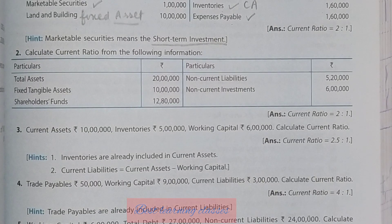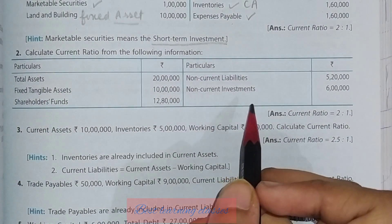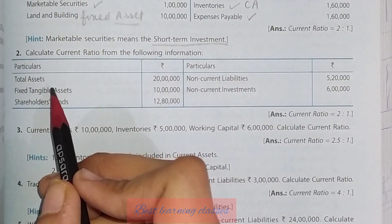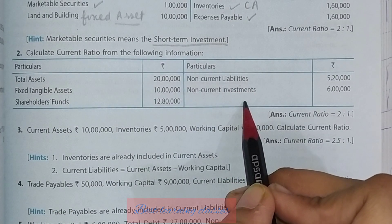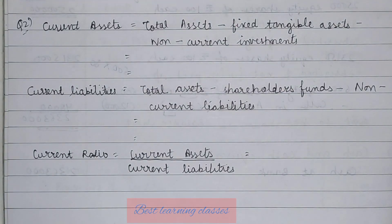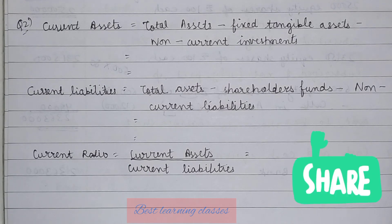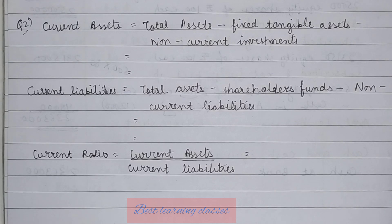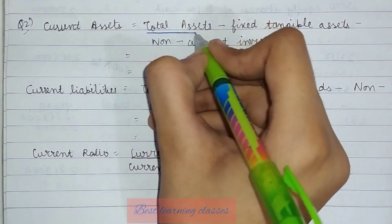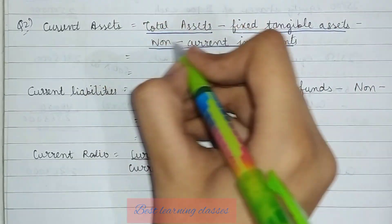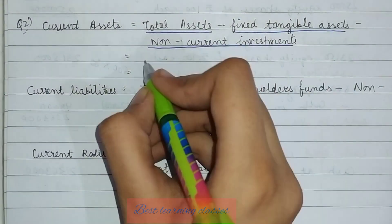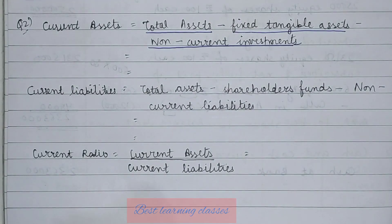Question number 2: same — calculate current ratio. But here, current assets and current liabilities are not given separately. You are given total assets, fixed tangible assets, shareholder funds, non-current liabilities, and non-current investments. For such questions, a different formula is used. Total assets minus fixed tangible assets minus non-current investments gives you current assets. So: 20 lakh minus 10 lakh minus 6 lakh = 4 lakh current assets.